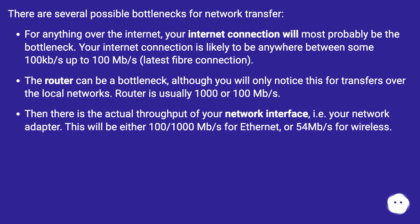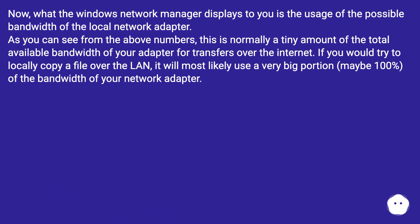Then there is the actual throughput of your network interface, i.e. your network adapter. This will be either 100 or 1000 Mbps for Ethernet, or 54 megabits per second for wireless. What the Windows network manager displays to you is the usage of the possible bandwidth of the local network adapter — as you can see, this is normally a tiny amount of the total available bandwidth.